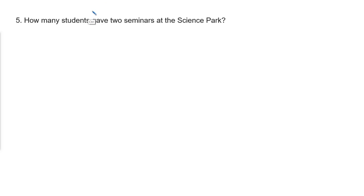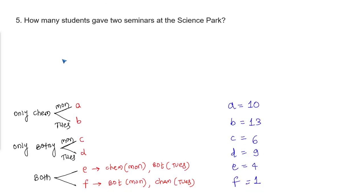Question 4: what is the total number of seminars given on Monday? On Monday, seminars were given by A, C, E, and F students — total = A plus C plus E plus F equals 10 plus 6 plus 4 plus 1 equals 21. Question 5: how many students gave 2 seminars at the science park? E plus F equals 4 plus 1 equals 5. Thank you.